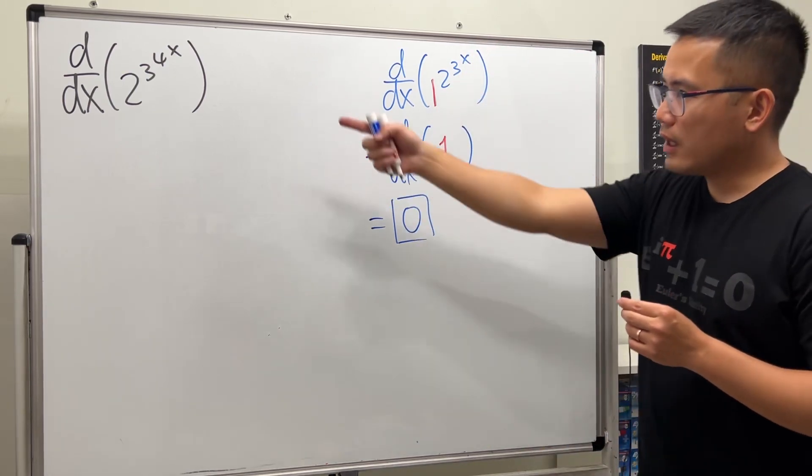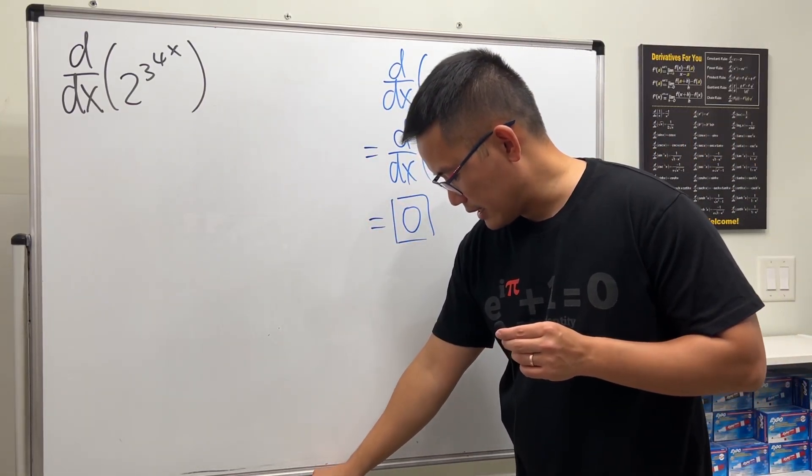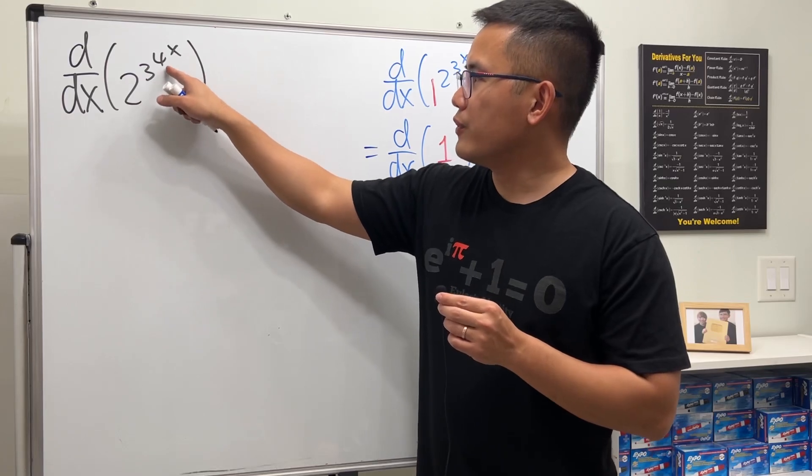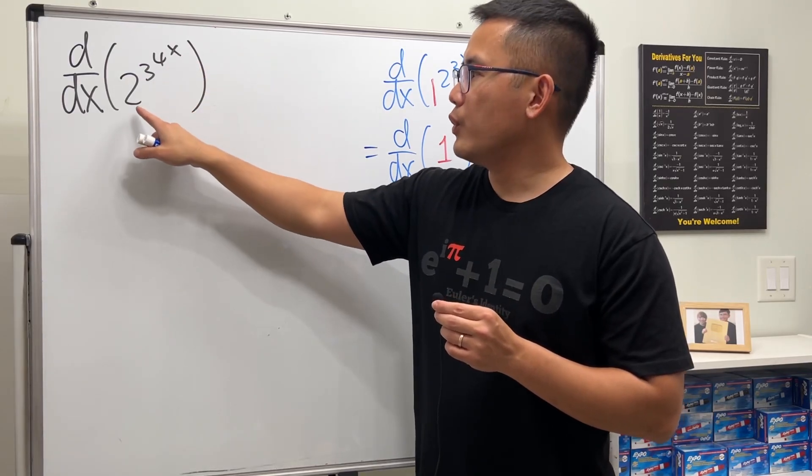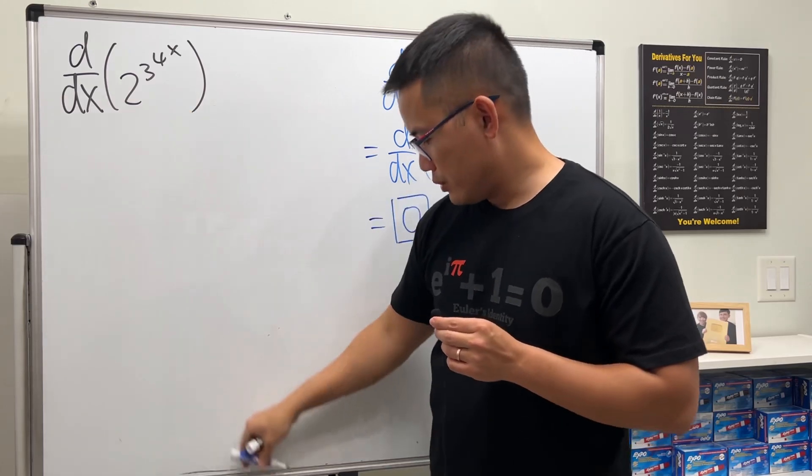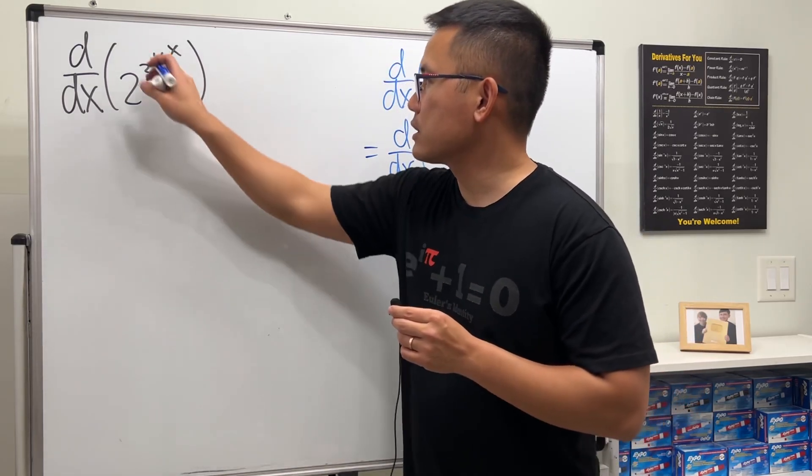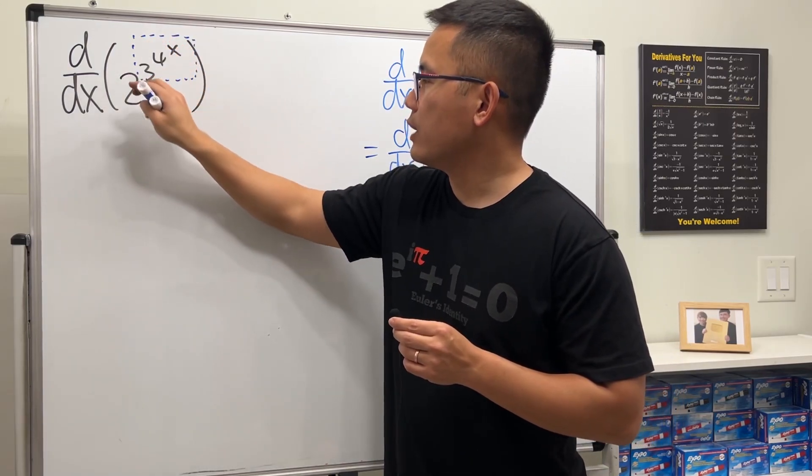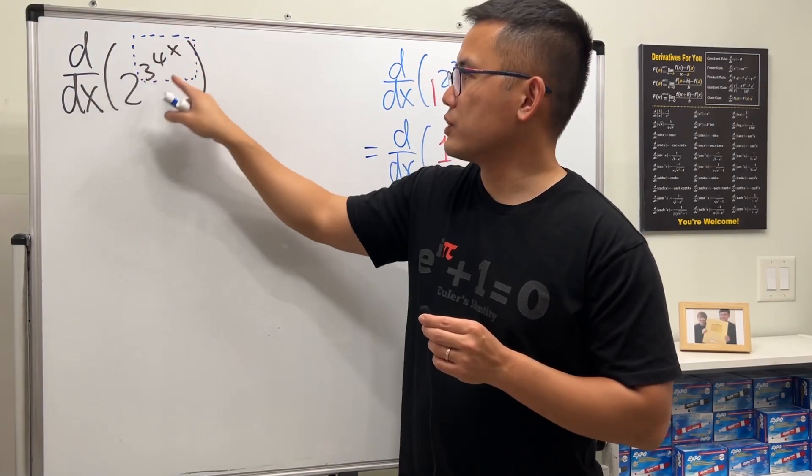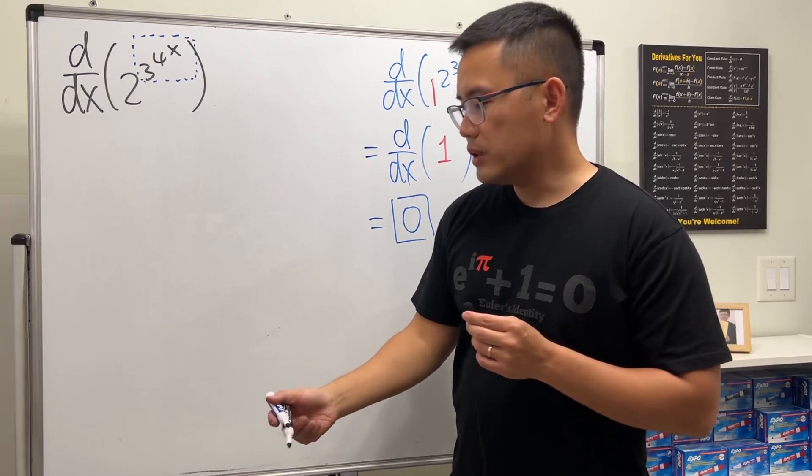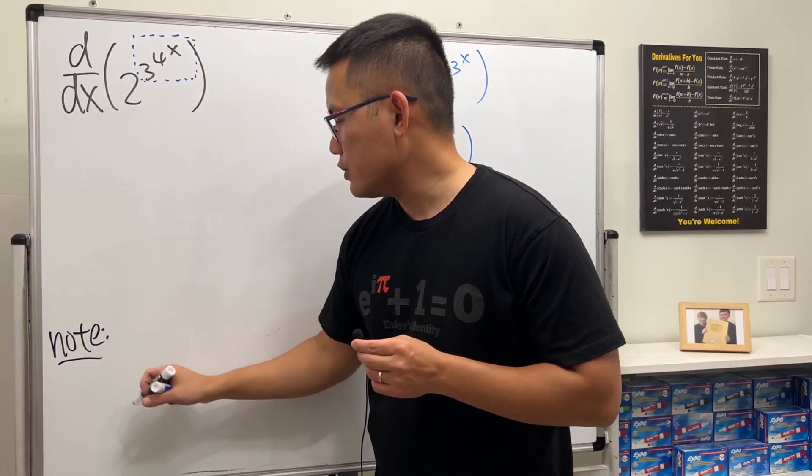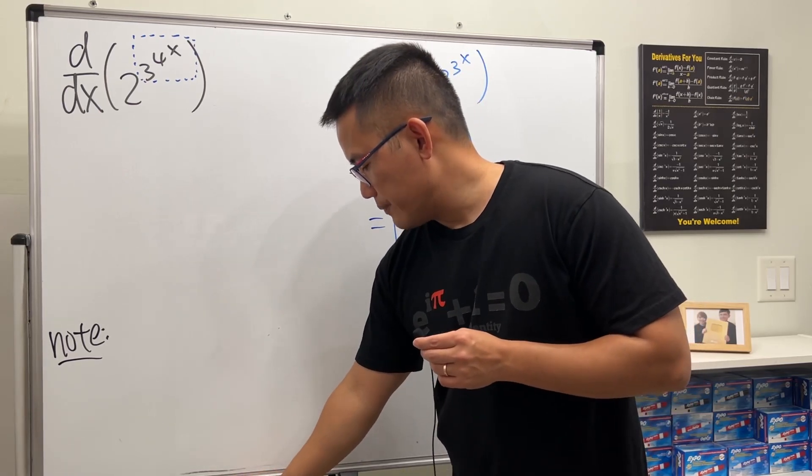Now let's actually focus on that, because that's actually trickier. To differentiate 2 to the 3 to the 4 to the x, first we are going to look at this as 2 raised to this power. 2 to the something, and this is the function. We will have to remember how to differentiate an exponential function.